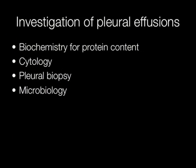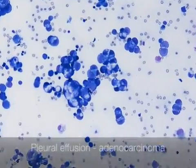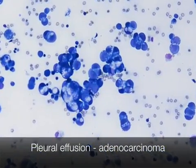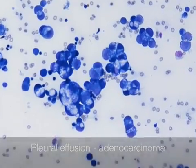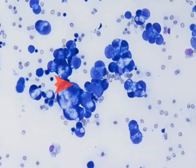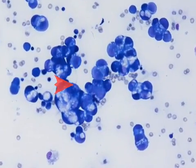Pleural effusions can be investigated in the laboratory in a number of ways. For example, biochemistry can look for the protein content, cytology and pleural biopsy for atypical cells, and microbiology for infection. This is a malignant pleural effusion caused by adenocarcinoma — the tumour cells can be seen in the centre of the field.